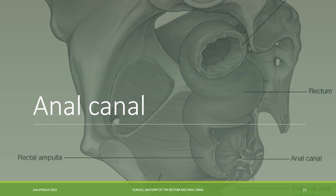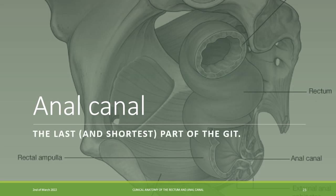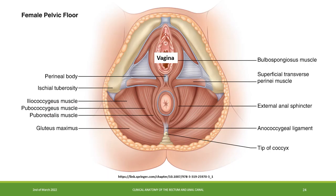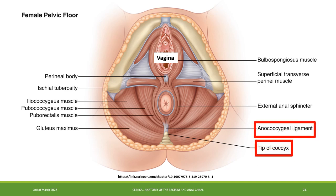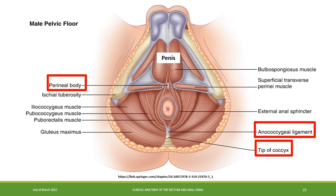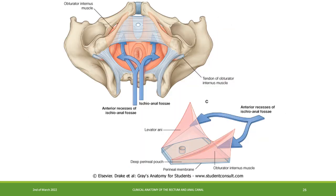The anal canal is the last and shortest part of the GIT. The anatomic relations in a female pelvis are, posteriorly, the tip of coccyx and anococcygeal ligament, and anteriorly, the perineal body and vagina. In the male pelvis, the relations are the same except that anteriorly, instead of the vagina, there is the membranous part of the urethra and the bulb of the penis. Laterally, the anal canal is related to the ischio-anal fossa on both sides.